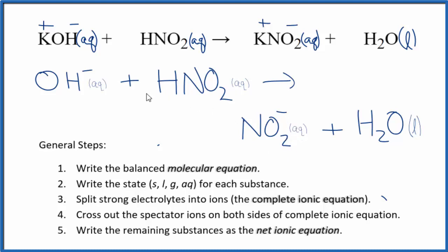So this is the balanced net ionic equation for KOH plus HNO2, and this is Dr. B.